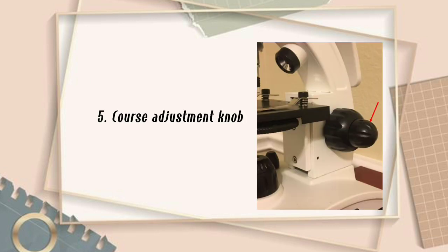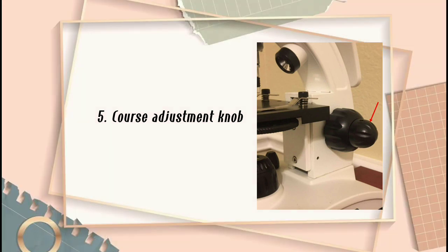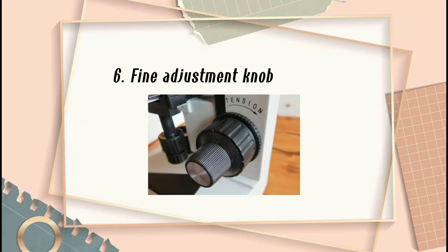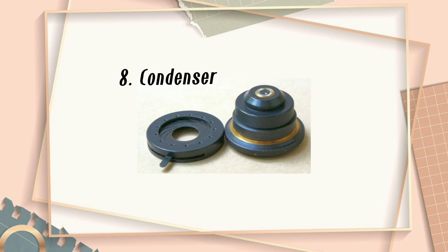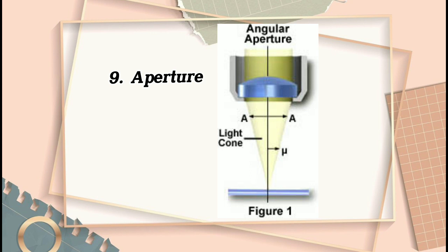Coarse adjustment knob — a rapid control which allows for quick focusing. Fine adjustment knob — a slow but precise control used to fine-focus the image when viewing. Stage — where the specimen is placed for observation. Condenser — acts to gather light from the microscope's light source and concentrate it into a cone of light that illuminates the specimen. Aperture — a measure of its ability to gather light and resolve specimen detail at a fixed distance.